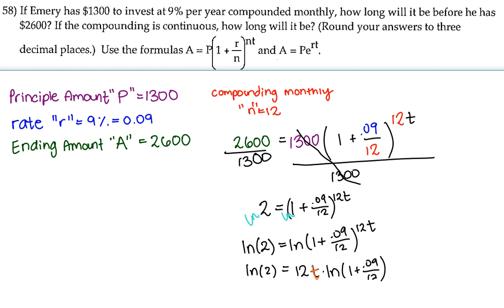Now since we're trying to get t by itself, we're going to divide both sides by everything that's not t. So the 12 and then the ln of 1 plus 0.09 over 12.